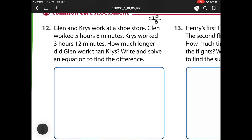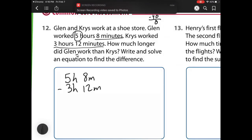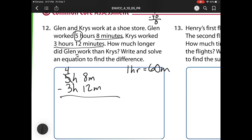For number 12, Glenn and Chris work at a shoe store. Glenn worked 5 hours and 8 minutes. Chris worked 3 hours and 12 minutes. How much longer did Glenn work than Chris? So here I have 5 hours, 8 minutes, minus 3 hours and 12 minutes. I need to regroup it. I can't do 8 minus 12, so I have to borrow. So I'm trading this 1 hour for 60 minutes. So I have 8 minutes. I'm getting 60 new ones. So I'll be 68. So now 8 minus 2 is 6. 6 minus 1 is 5. So 56 minutes and 1 hour. So that is how much longer Glenn worked.